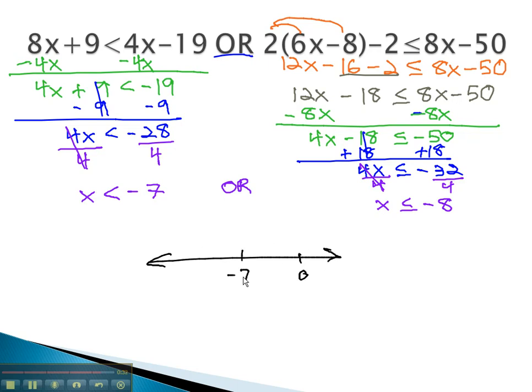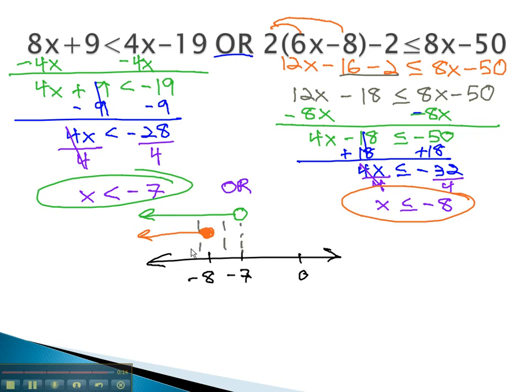On a number line, we can graph the two separately, starting with the negative 7 open circle, less than means we go down. From negative 8 with a closed circle, less than means we go down. We only require one graph to be true, which turns out to be the bigger graph from negative 7 on down. The only part not making the final graph is the part that has nothing. In interval notation, negative infinity to negative 7.